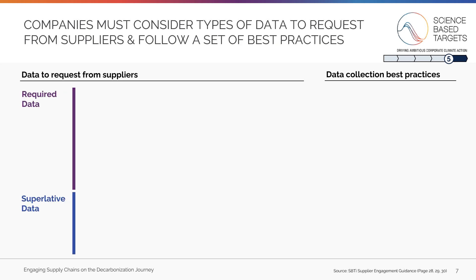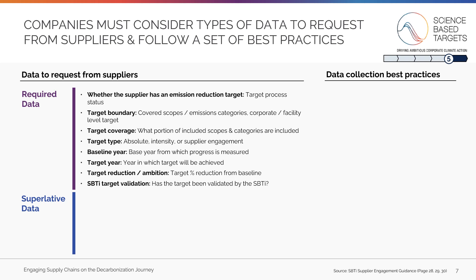At the very least, the data you collect from suppliers should provide information on their greenhouse gas emission reduction targets so they can be validated against SBTi criteria. There are eight types of data which will be required from suppliers to set science-based targets. First, determining whether the supplier has an emission reduction target provides basic detail on where suppliers are on the journey. Target boundary determines which scopes and emissions categories are covered. Target coverage communicates what portion of included scopes and categories to cover. Target type identifies whether a target is absolute, intensity, or supplier engagement based. Baseline year provides the year from which progress is measured. Target year provides the year in which the target will be achieved. Target reduction or ambition outlines the target percentage reduction from baseline for absolute and intensity targets. And lastly, SBTi's target validation provides the final check as to whether the target has been validated by the SBTi.